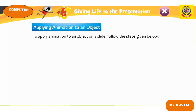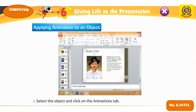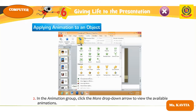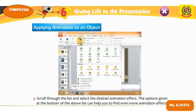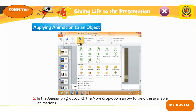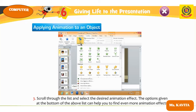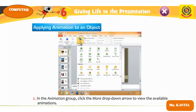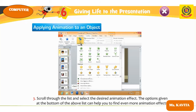Applying animation to an object: select the object and click on the Animation tab. In the Animation group, click the More drop-down arrow to view the available animations. Scroll through the list and select the desired animation effect. Options at the bottom of the list can help you find even more animation effects.